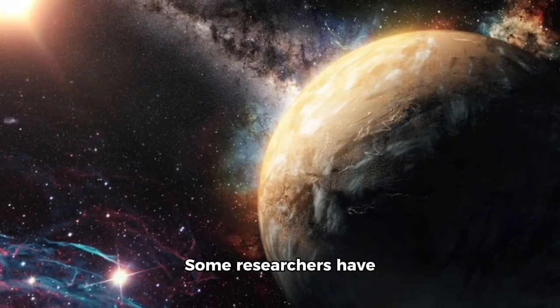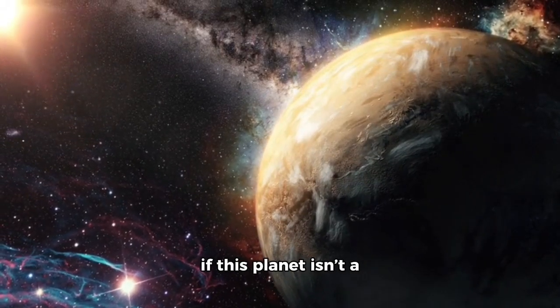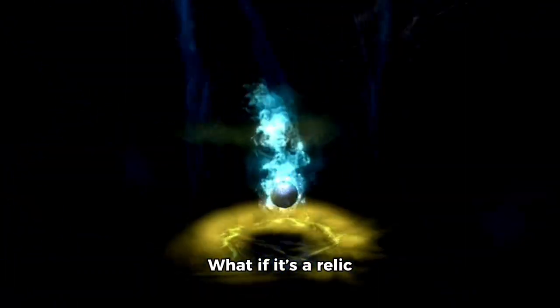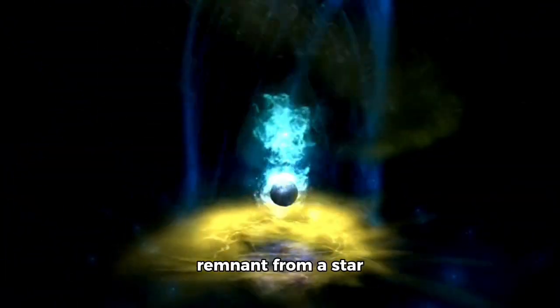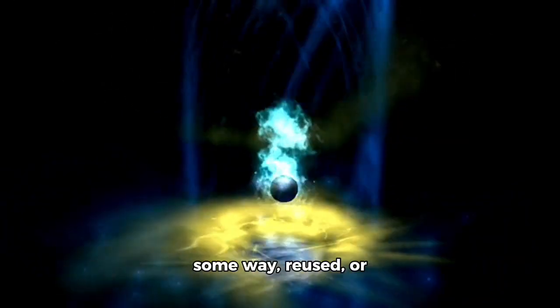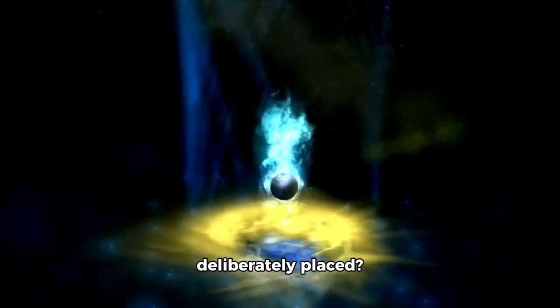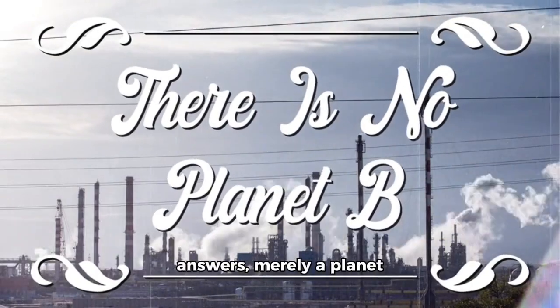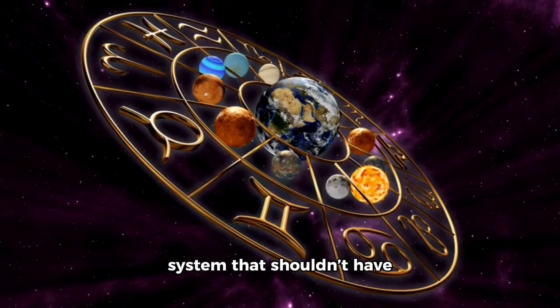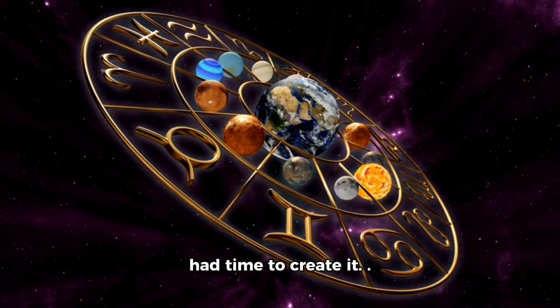Some researchers have begun to speculate: What if this planet isn't a product of its current system at all? What if it's a relic from a past cycle? A remnant from a star system that came before, transplanted in some way, reused, or deliberately placed? For now, there are no answers—merely a planet glimmering at over 1,000 degrees, suspended in a system that shouldn't have had time to create it.